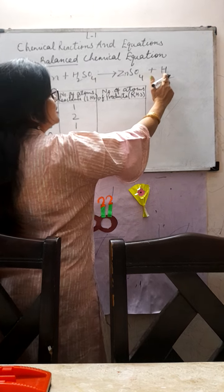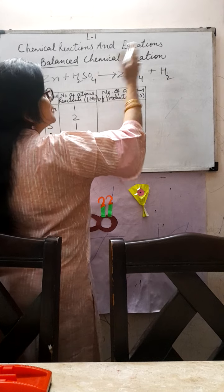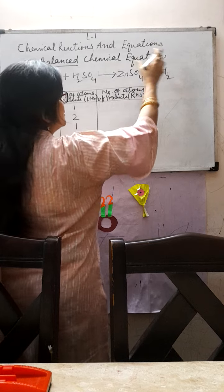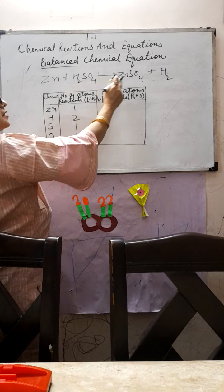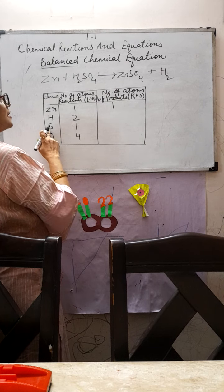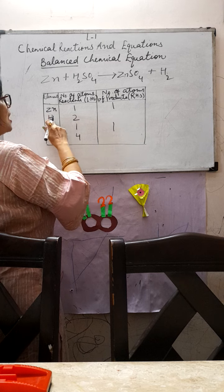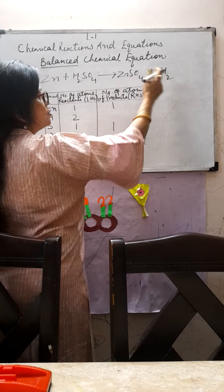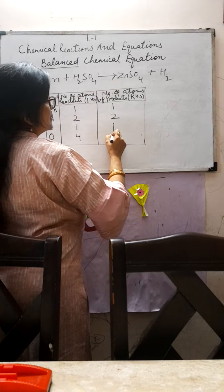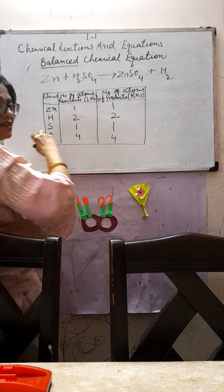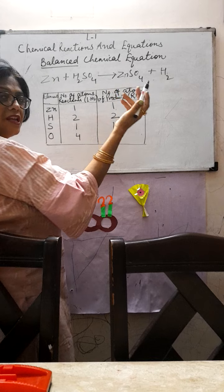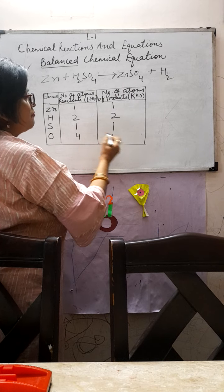Now find out the atoms on the product side — after the reaction, ZnSO₄ and H₂ are formed. Zinc: one. Sulfur: one. Hydrogen: two. Oxygen: four. Now check — are LHS and RHS the same? Zinc: one equals one. Hydrogen: two equals two. Sulfur: one equals one. Oxygen: four equals four. Yes, they are all equal!